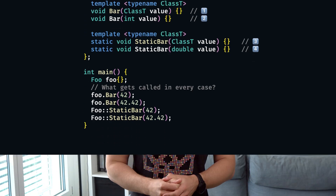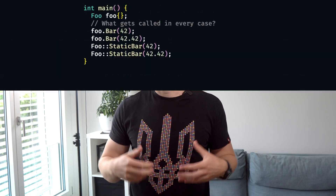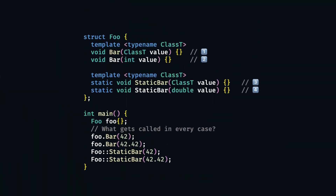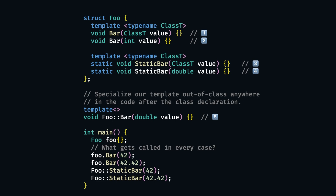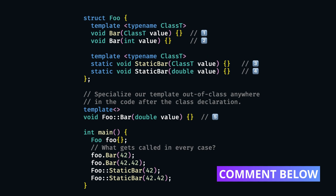There is one difference to the freestanding functions though. While it is always possible to introduce a new overload for a freestanding function at any place in the codebase after that function was defined, it is impossible to create new class method overloads outside of the class declaration. So if we cannot change the code of our class, we're left with full class function template specialization as our only option. And just like before, please tell me in the comments what you think gets called now.